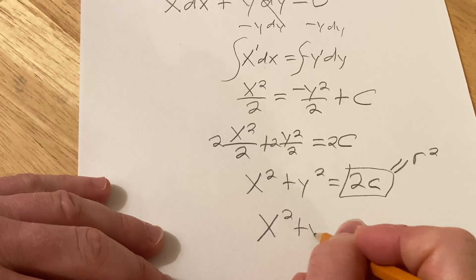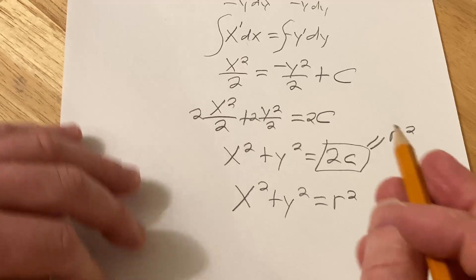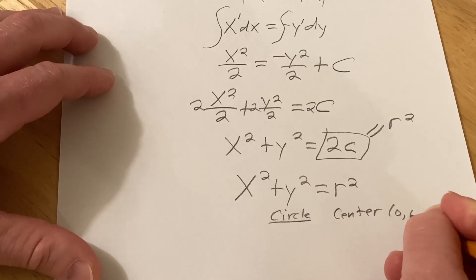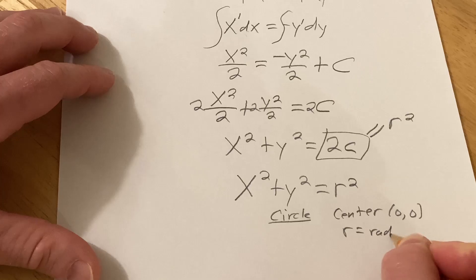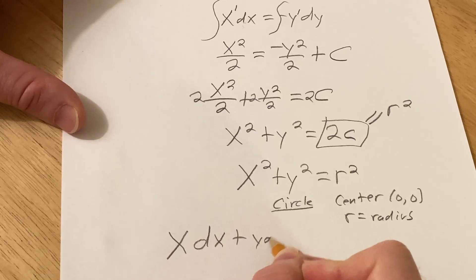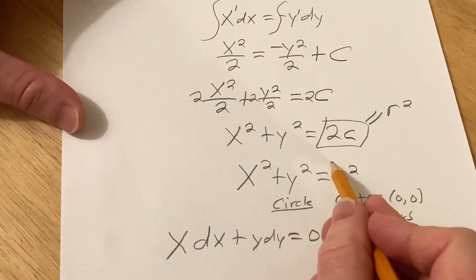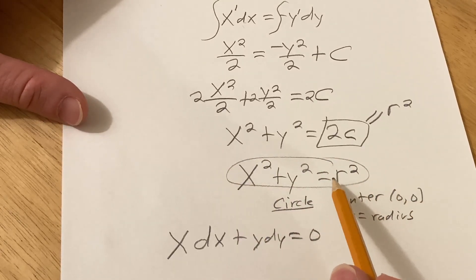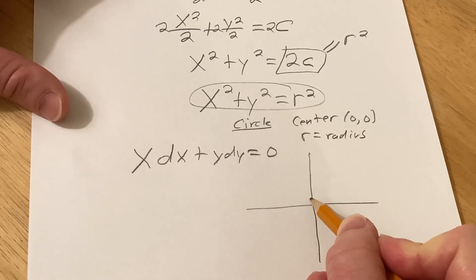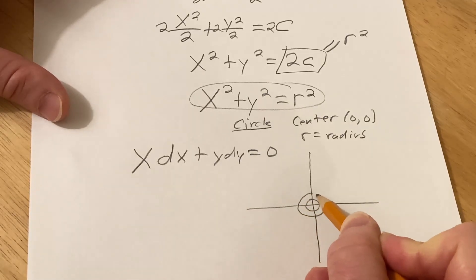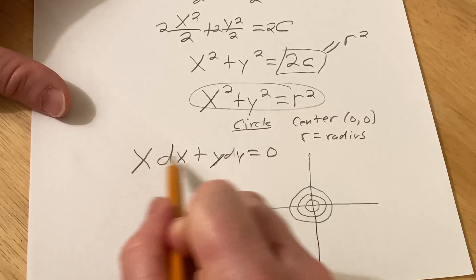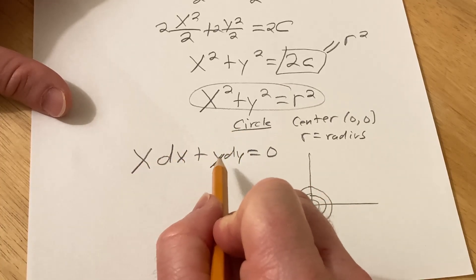So we have x squared plus y squared equals r squared. This is the equation of a circle with the center at the origin, 0, 0, and a radius of r. So what is that saying? It's saying that the solution of this differential equation, x dx plus y dy equals 0, is this equation here. So there are infinitely many solutions. And basically what you have here is infinitely many circles of radius r. So if you were to graph your solution, maybe you'll have a circle here, maybe you'll have a circle here, and maybe you'll have a circle here. Infinitely many circles.